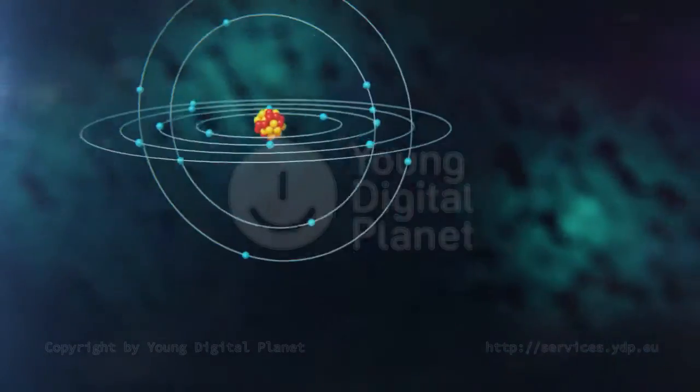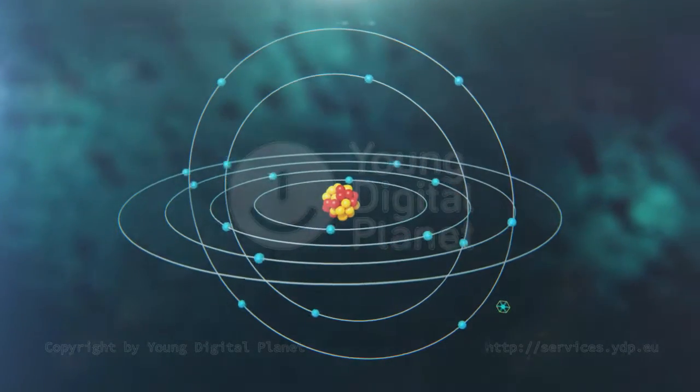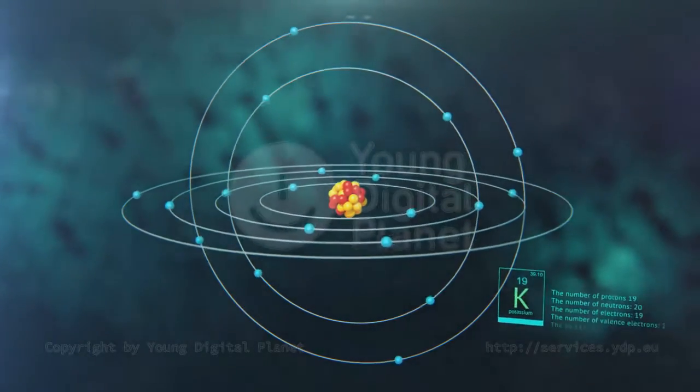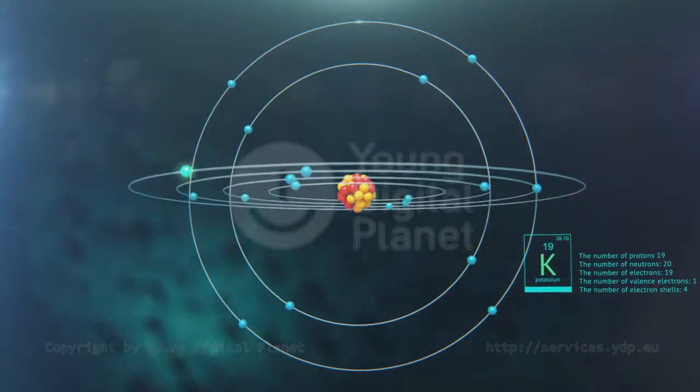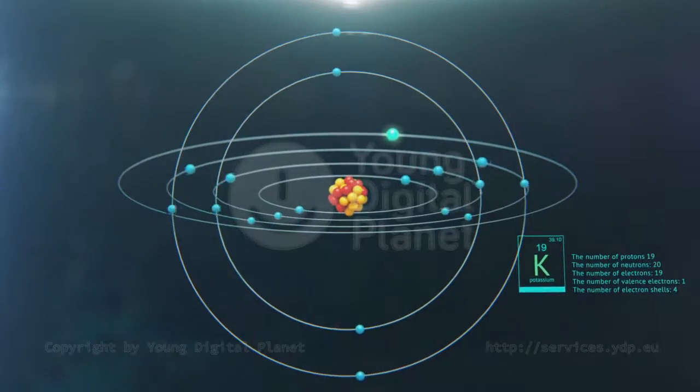Nineteen protons and twenty neutrons make up a potassium nucleus, which is orbited by nineteen electrons, one of them being a valence electron, on four electron shells.